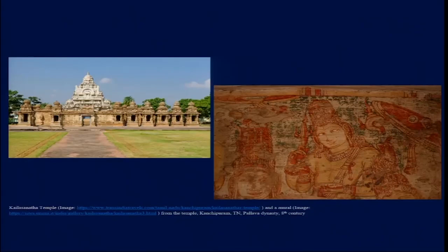We have looked into the caves of Ellora, and similar activities were not limited just to rock shelters or caves — they were also included in temples. For example, we have one of the temples from the 8th century: the Kailashnathar temple in Kanchipuram, which has remnants of paints and pigments from the 8th century.